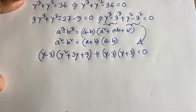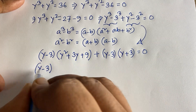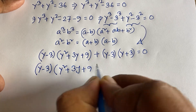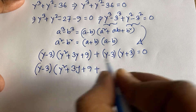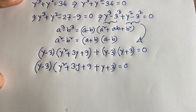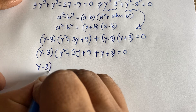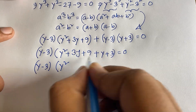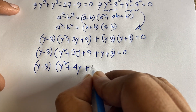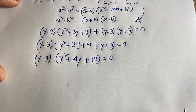Since (y − 3) is a common factor, we factor it out. This gives (y − 3)(y² + 3y + 9 + y + 3) = 0, which simplifies to (y − 3)(y² + 4y + 12) = 0.